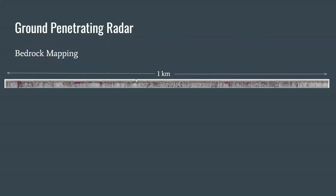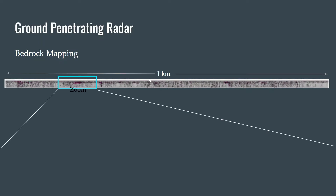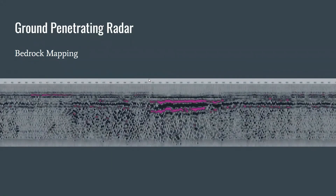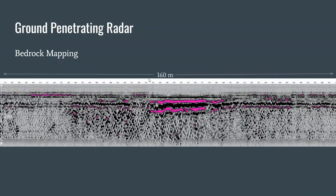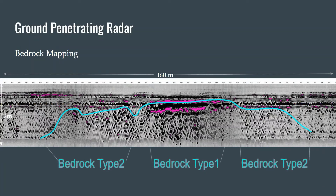Looking at the collected data — this is a one kilometer stretch, two meters in depth — you can't make out much at that scale, but zooming in, we start to see the actual GPR reflections. We can identify a 30 centimeter strip of topsoil across the entire section, while the massive cohesive reflection in the center is bedrock type 1. The disparate, quieter reflections on either side are indicative of gravels, or what we've called bedrock type 2.